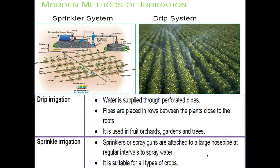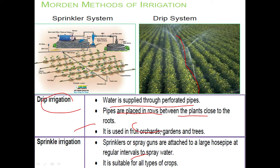In modern methods, two important techniques are used: the drip system and the sprinkler system. In drip irrigation, water is supplied through perforated pipes placed in rows between plants, close to the roots. It is used mainly in fruit orchards, gardens, and for trees. It is an excellent method for regions where water scarcity is high, as there is no wastage of water — each drop reaches directly to the roots of the plants.